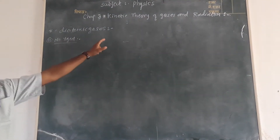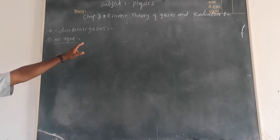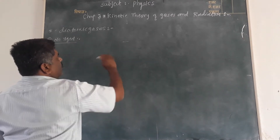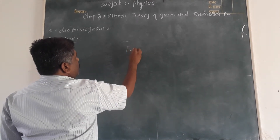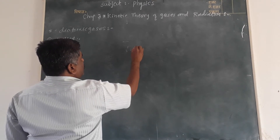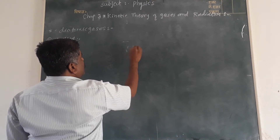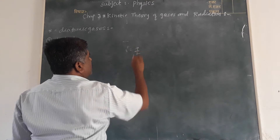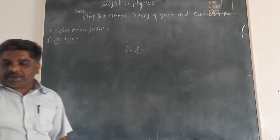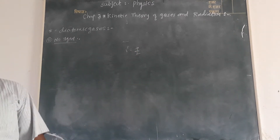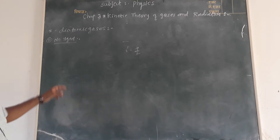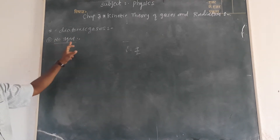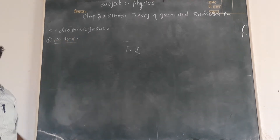For diatomic gases, rigid molecules give us the adiabatic ratio γ equal to 7/2, which is the adiabatic ratio in the case of diatomic rigid molecules.